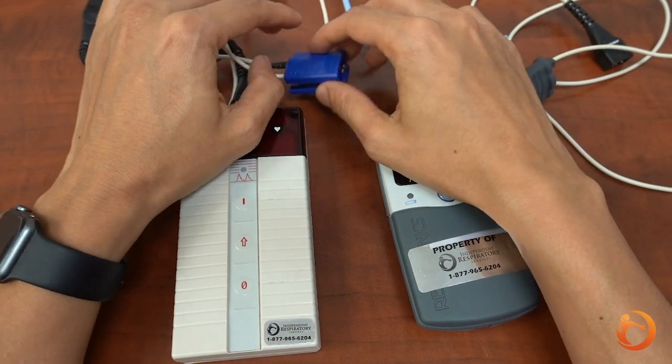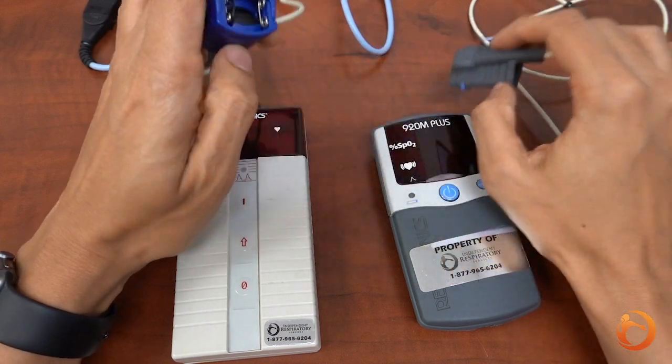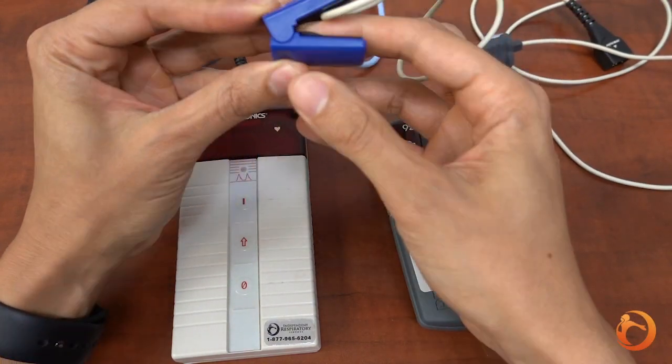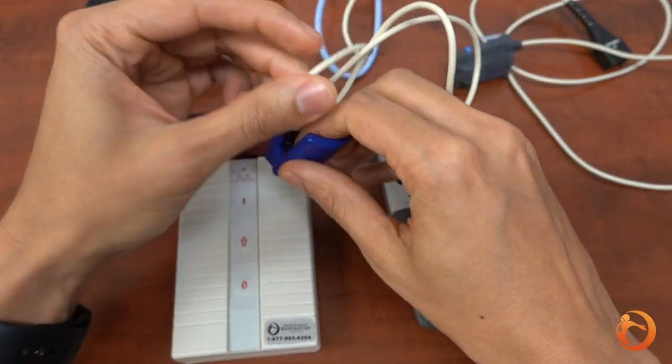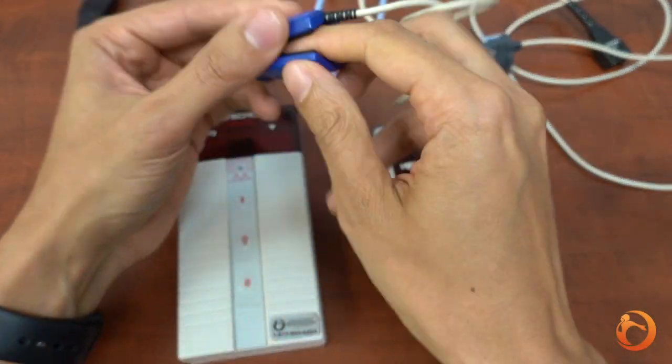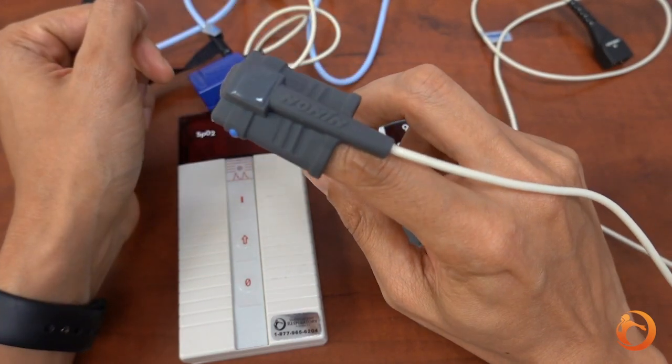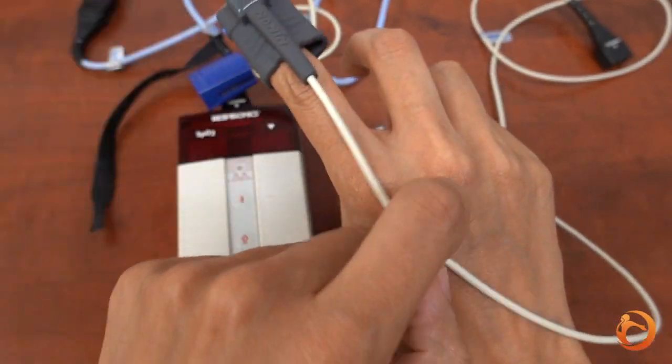The probe itself could be a clip or a rubber boot. If you were given a device with a blue clip, clip it on your finger with the cable on top of the finger. If you were given the grey rubber boot, then slide your finger in it, making sure that the cable will be on top of the finger.